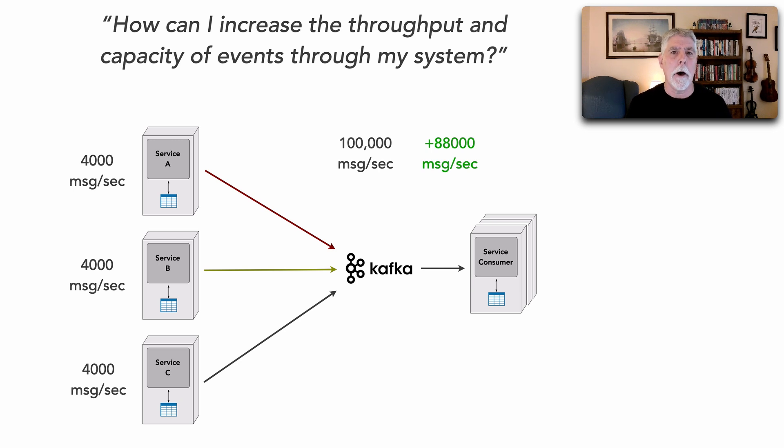As a matter of fact, in this particular scenario, 88,000 additional messages a second we could process. Which is why Kafka, Apache Kafka is so popular, especially in areas of microservices where we do have a lot of services, areas of logging facilities, things like metrics gathering and observability.